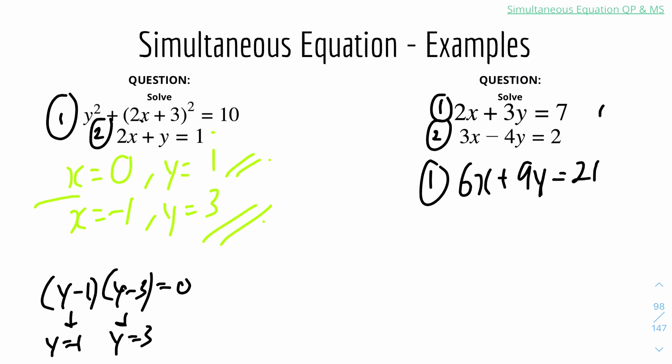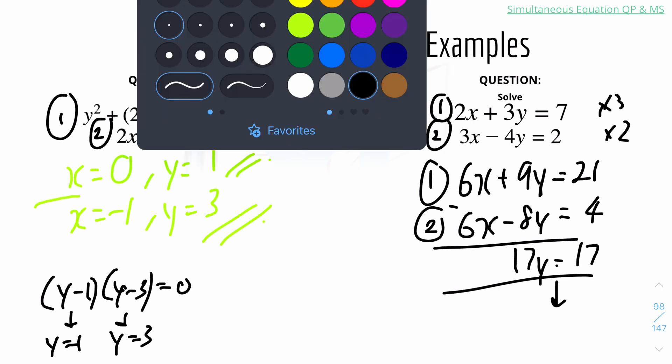From the second equation, I could times everything by 2. It will be 6x minus 8y equals 4. And subtract everything by each other. So it will be 6x minus 6x equals 0. And 9 minus minus 8, which is 9 plus 8, is 17y. And 21 minus 4 will get us 17. And then from this, we know that y equals 1.